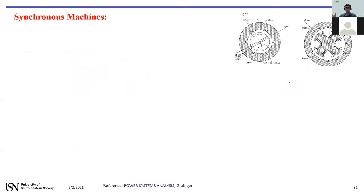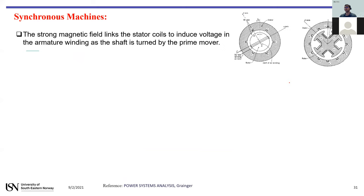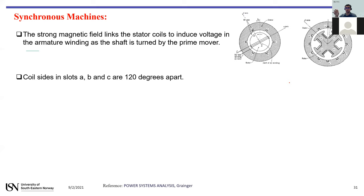For both rotor types, the strong magnetic field links the stator coil to induce voltage in the armature. The rotor is mounted on the shaft driven by the prime mover. Since we have three phases, the coil sides are placed in three slots that are 120 degrees apart — coil a and a', b and b', and c and c' — similarly for the salient pole rotor.